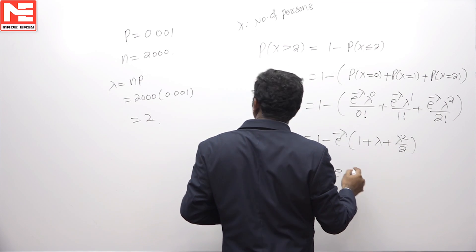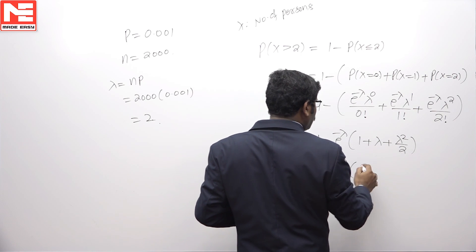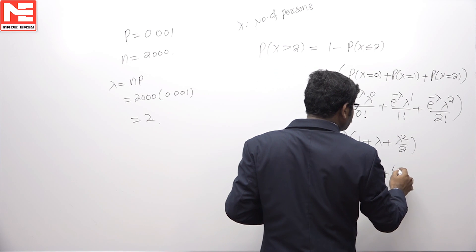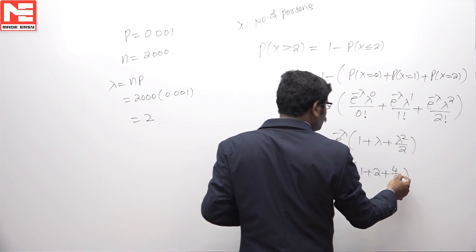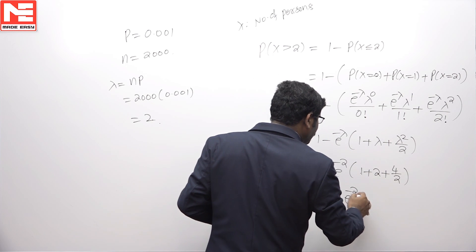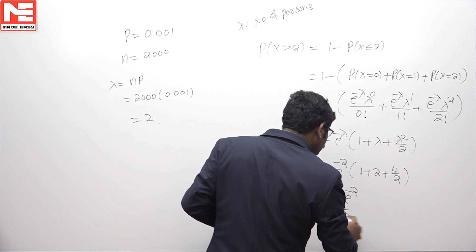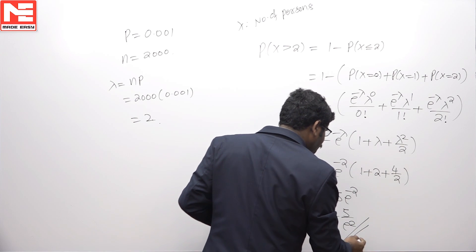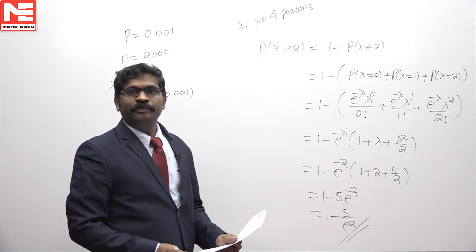1 minus e to the power minus 2 times open parenthesis 1 plus 2 plus 4 by 2, which is 2 plus 2 equals 4, 4 plus 1 equals 5. So 1 minus 5 times e to the power minus 2, which is 1 minus 5 by e squared is the probability.